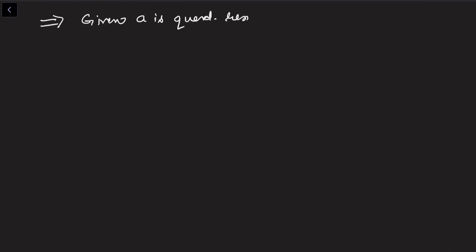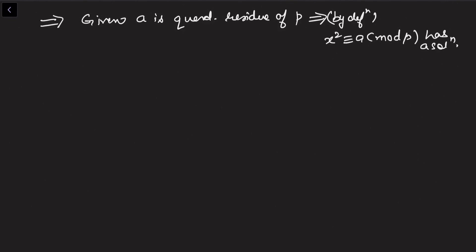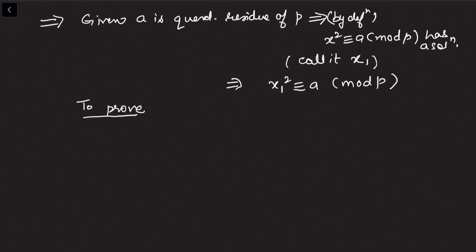Now let us see the proof of this theorem. Since the condition is if and only if, let me prove the forward direction first. Assuming a is a quadratic residue of p, by definition x² ≡ a (mod p) has a solution. Call this solution x₁, so x₁² ≡ a (mod p). We need to prove that a^((p-1)/2) ≡ 1 (mod p).